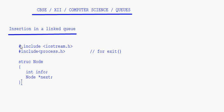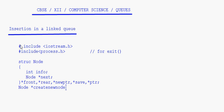The pointers we need are: front pointer, rear pointer, new ptr, save pointer, and ptr. Now let's write the prototype for the function createNewNode, which takes one integer parameter. It takes an integer value as information and returns an address, so the return type is node pointer.